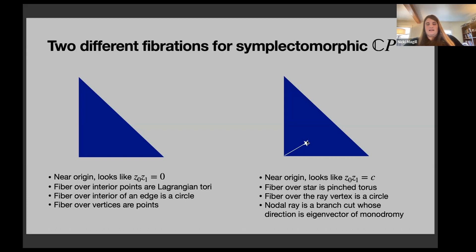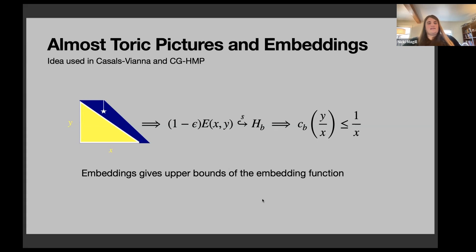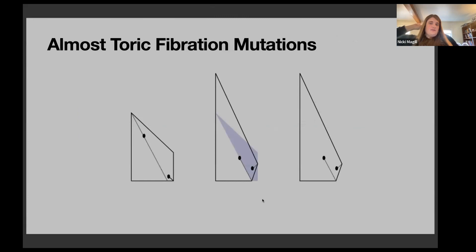These fibrations are relevant for symplectic embeddings. Inspired by Casals, Vianna, and Cristofaro-Gardiner, Holm, Mandini, Pires, we use almost-toric pictures to construct symplectic embeddings. If you can fit a triangle corresponding to one of our ellipsoids inside an almost-toric picture — even with pinched tori in the interior — you get an embedding of an ellipsoid into your Hirzebruch surface. This gives upper bounds on the embedding function. One nice feature of these pictures is we can perform mutations on them to get new pictures for the same symplectomorphic manifold.